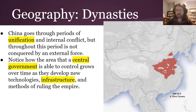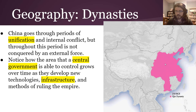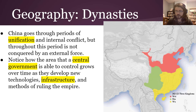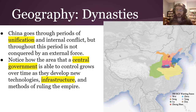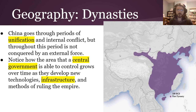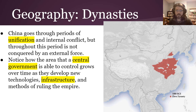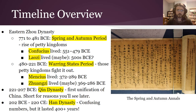You can see the dynasties developing over time: from the Zhou to the Warring States period, to the Qin, and then quickly to the Han — the largest, even spreading out along the Silk Road. China goes through periods of unification and internal conflict, but throughout this period it isn't conquered by an outside force. Over time, the central government got better at controlling larger areas using new technology, new infrastructure like roads and communication systems, and better ways of thinking about how to rule an empire.